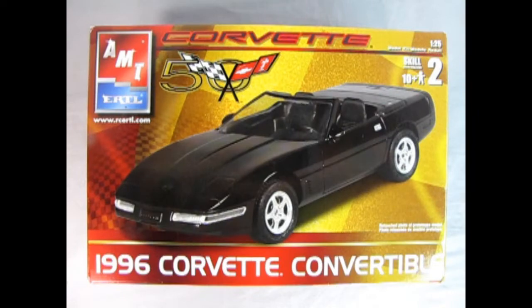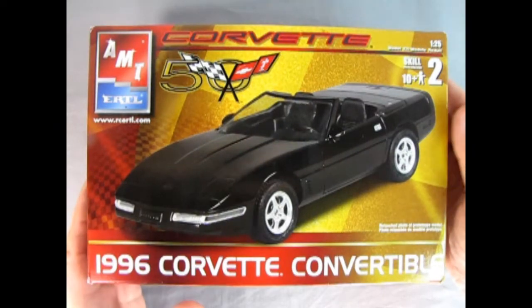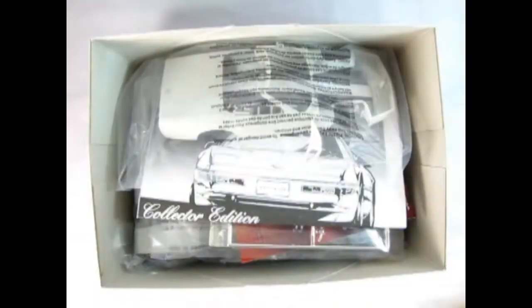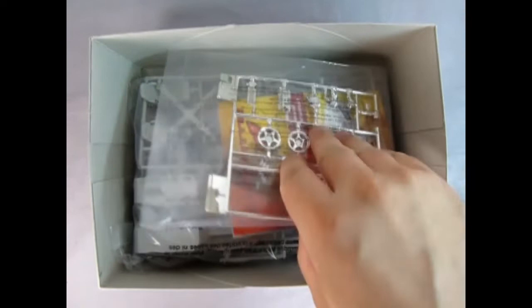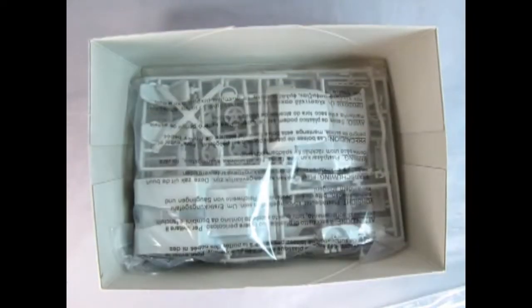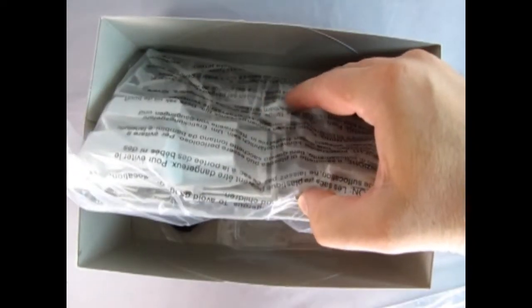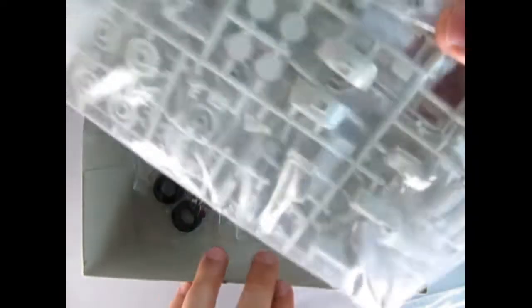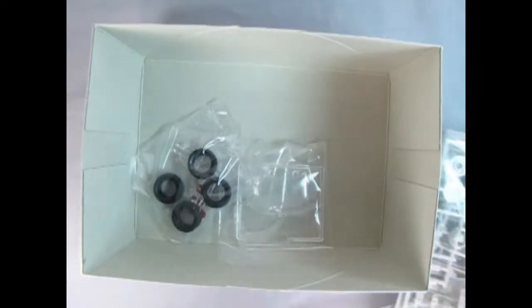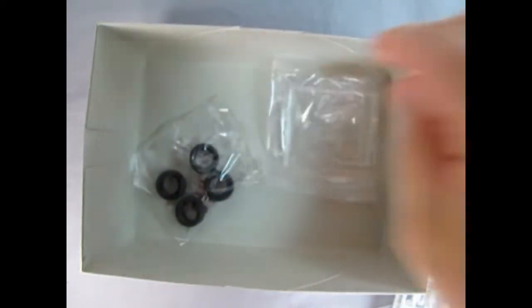So do you think we should rip the lid off this box and see what's inside? Yeah, I think so too. So let's do that. Here we've got our Corvette body, our instructions, we also have our chrome parts, a 50th anniversary collector card set and actually that's like a promo thing. And then we've got all our grey plastic components, our tires and our glass.